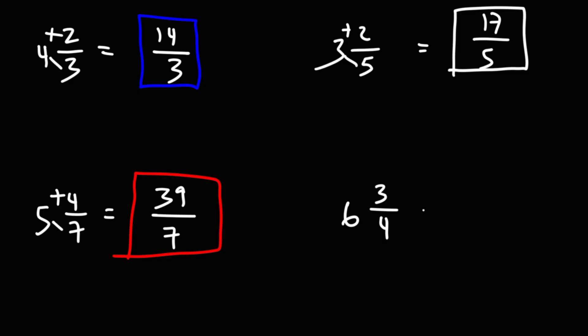For the last one, we're going to rewrite the denominator, multiply 6 and 4, which is 24, add 3, that's going to be 27. So it's 27 over 4.